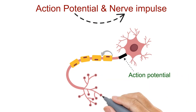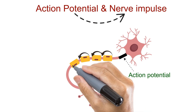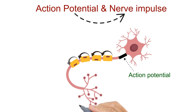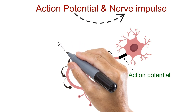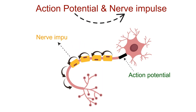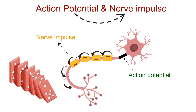But when that event keeps repeating from one section of the axon to the next, it forms a wave of action potentials traveling along the entire length of the neuron. And that traveling wave is what we call the nerve impulse. You can think of it like a row of dominoes — when one falls, it triggers the next, and the motion continues along the line.